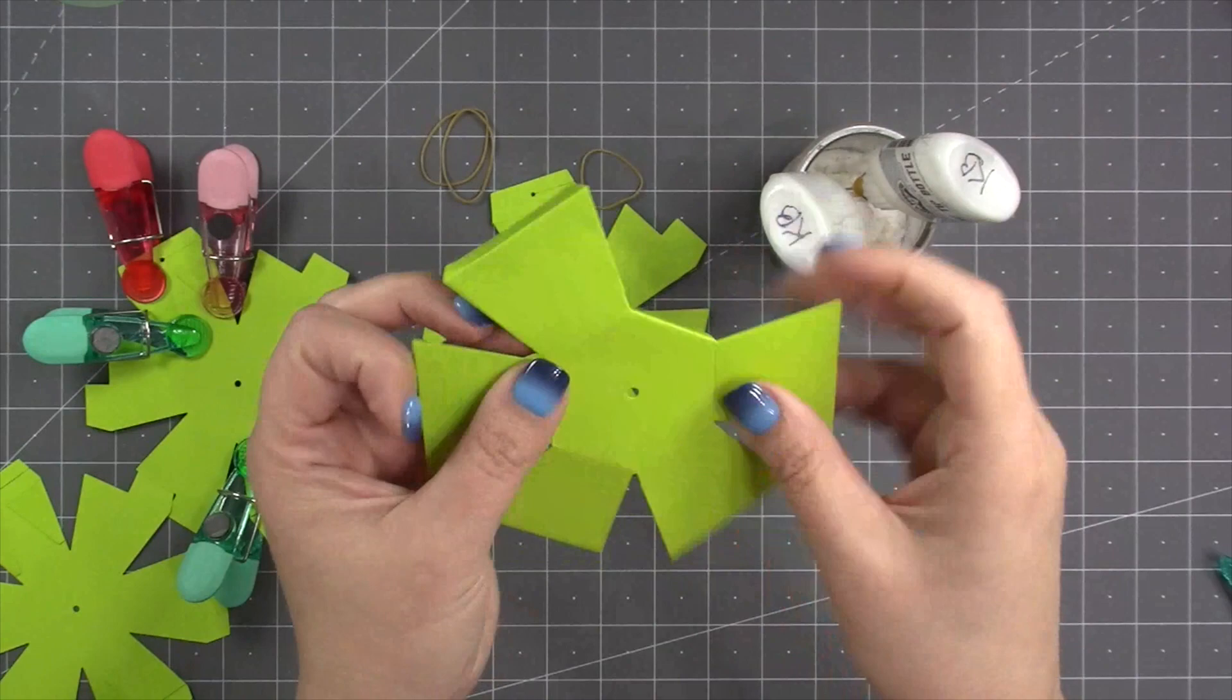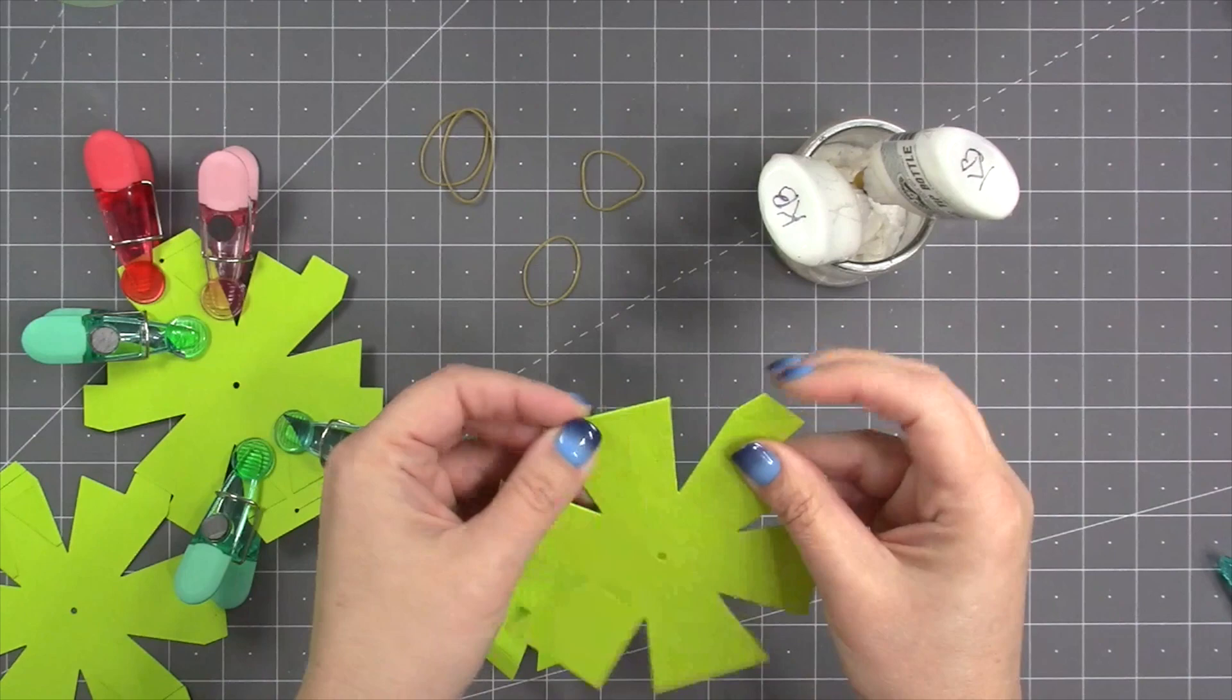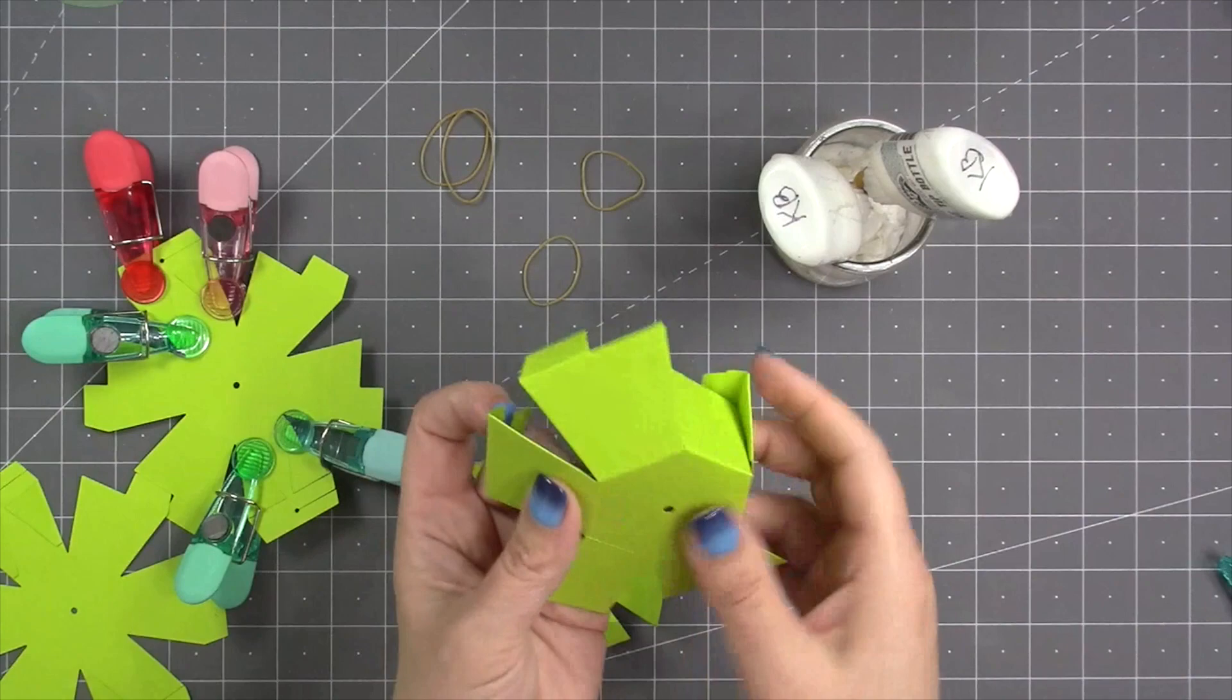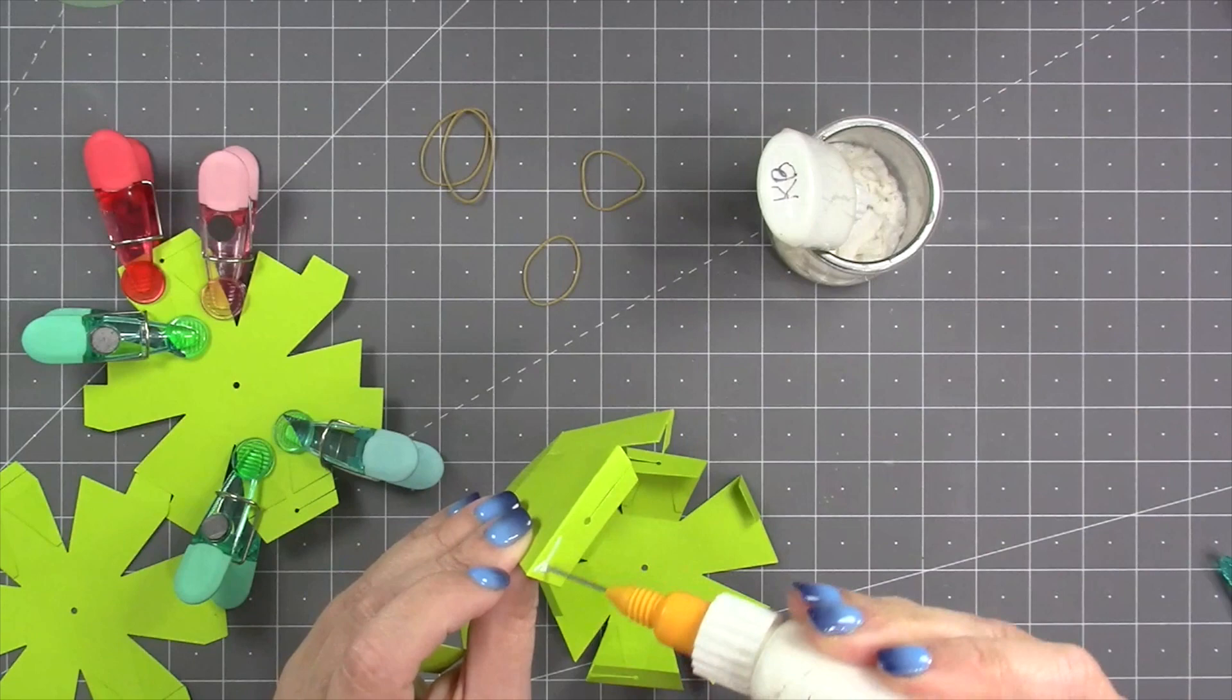The next step is to work all the folds in each piece. They all get folded as mountain folds, meaning you're folding away from yourself, and that creates half of the surprise ball. If you need to see this process go a little slower, you can watch the full assembly video for the surprise ball pop-up. I will link it at the end of this video.